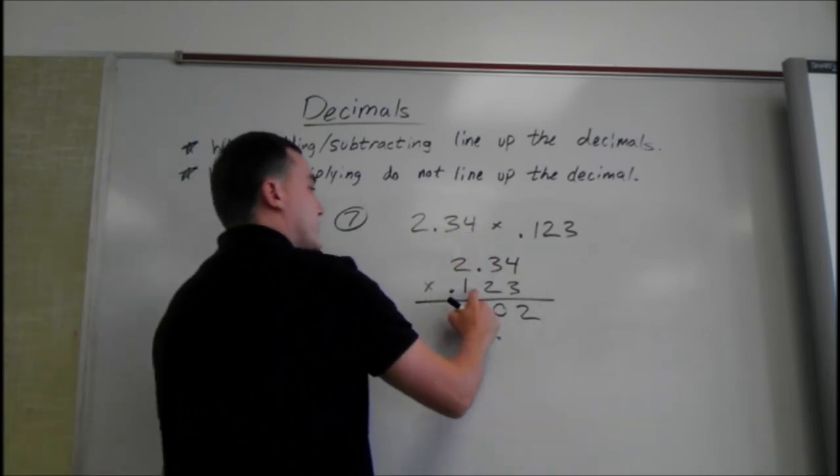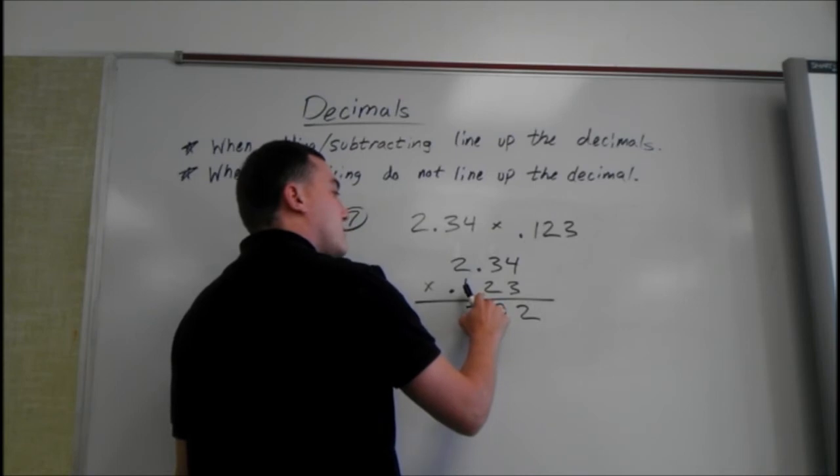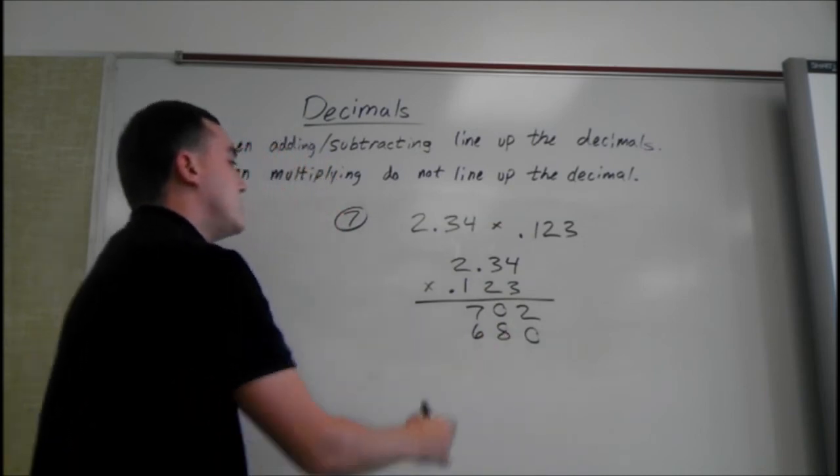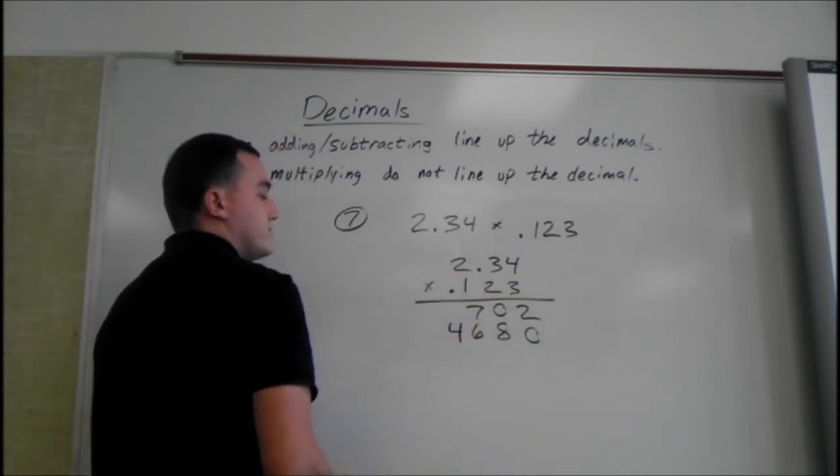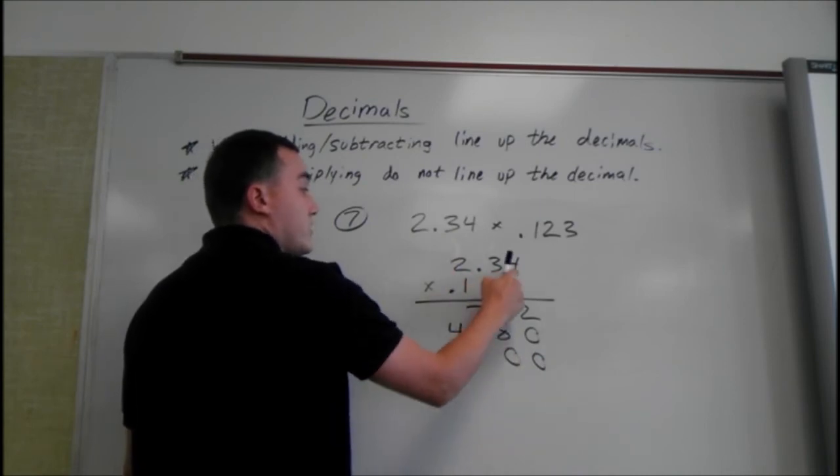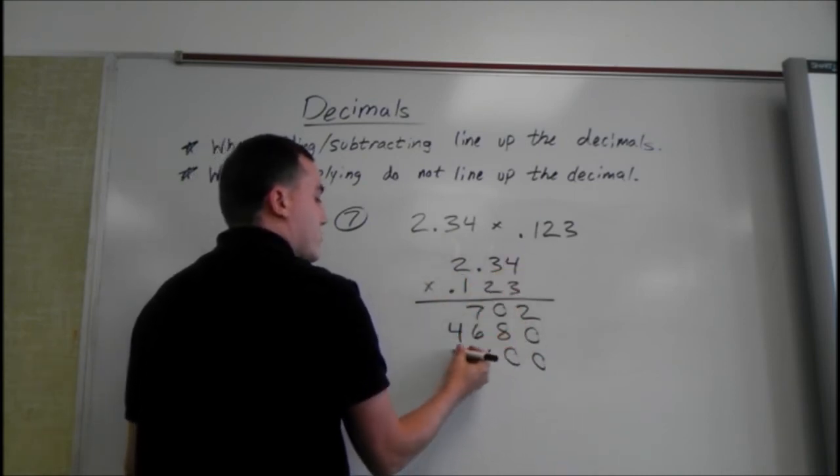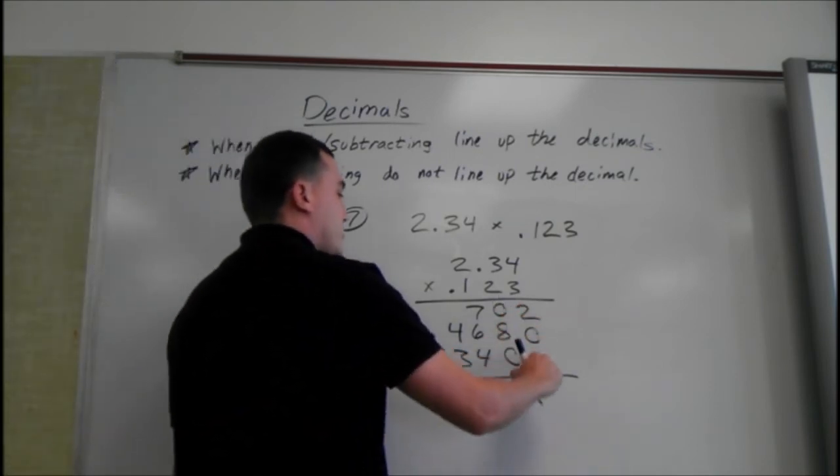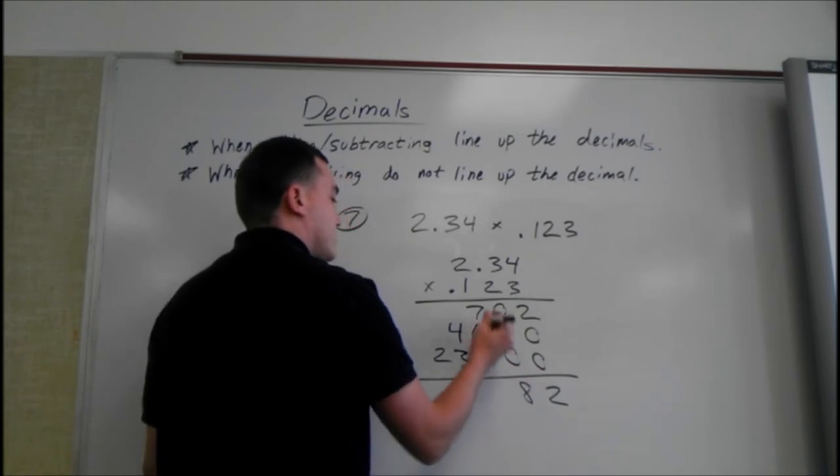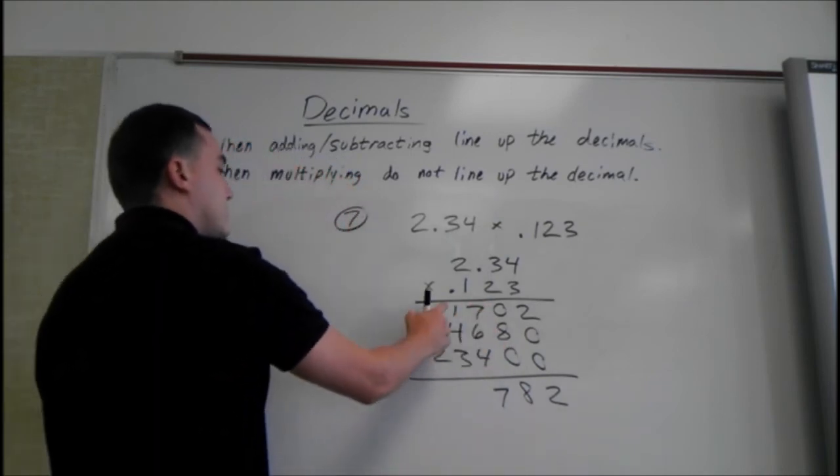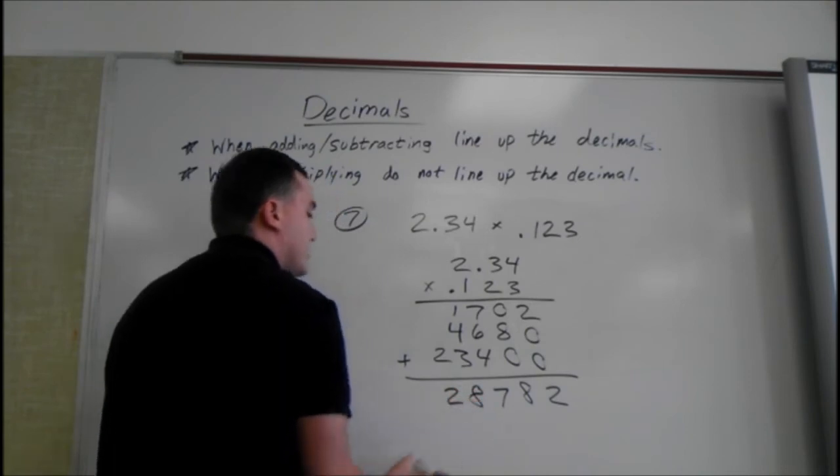Whenever you're doing the next step, we're going to add a 0 first because this is the second place. 2 times 4 is 8, 2 times 3 is 6, 2 times 2 is 4. This is the second time, so we're going to add two 0s. 1 times 4 is 4, and 3 and 2. Then we can add all of these up. 2 plus 0 plus 0 is 2, this one's 8, 7 plus 6 is 13 plus 4 is 17. 4 plus 1 is 5 plus 3 is 8, and 2 drops down.